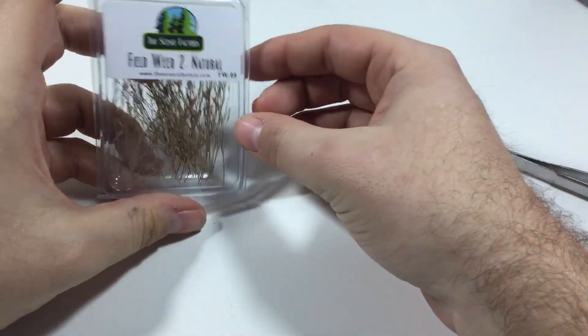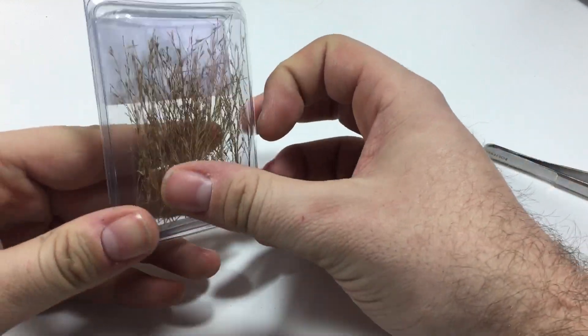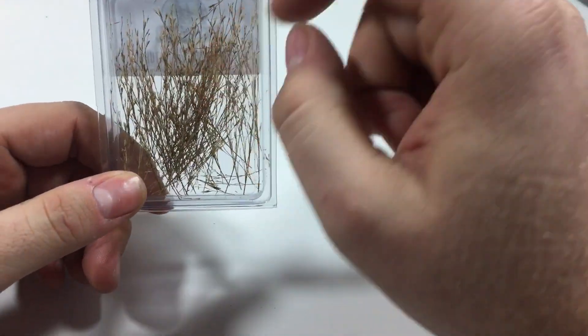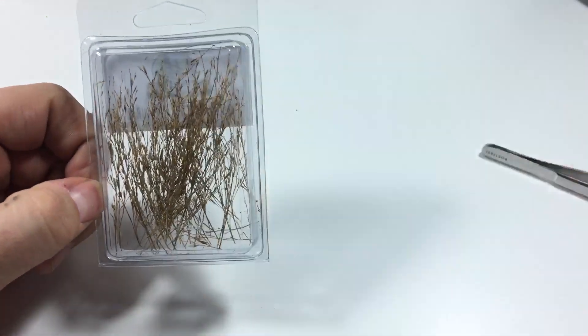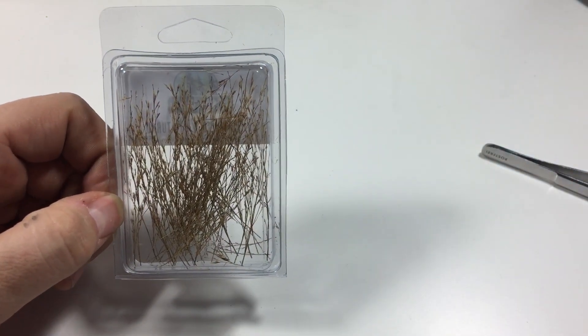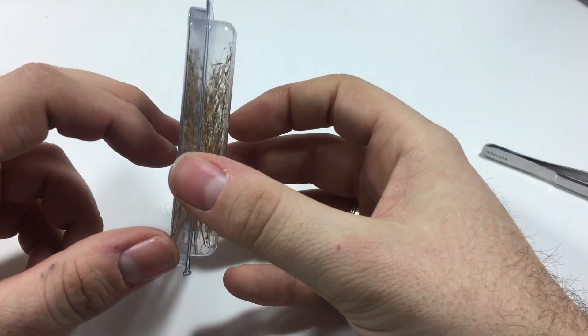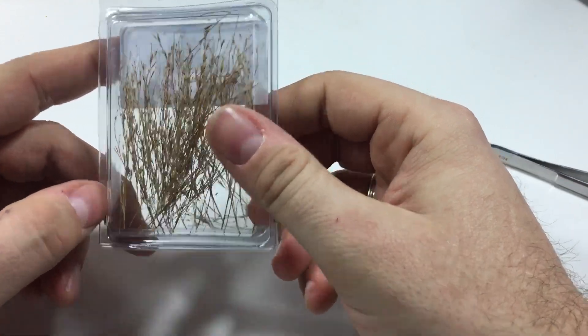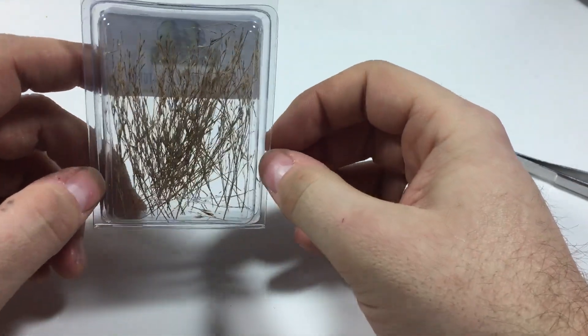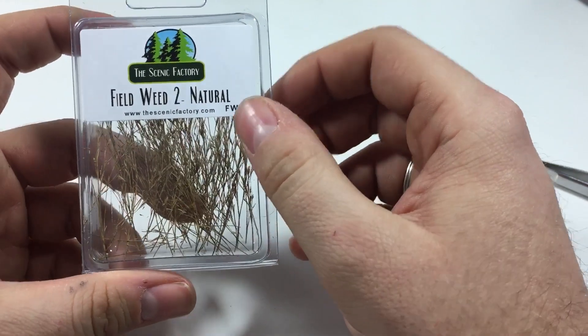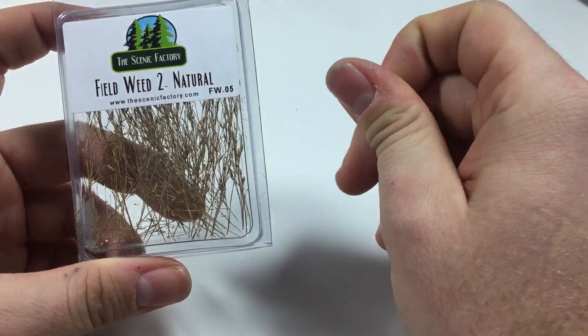And guess what, there's even more. We have field weed number two natural color. You can get these in different colors. I thought that this natural color will be the perfect one for the diorama I'm envisioning, so I went with this. Yeah, looks really nice. I don't think I need to open them because you can actually see how they look and what they are. Like I said, you can get them in different colors. Beautiful stuff.